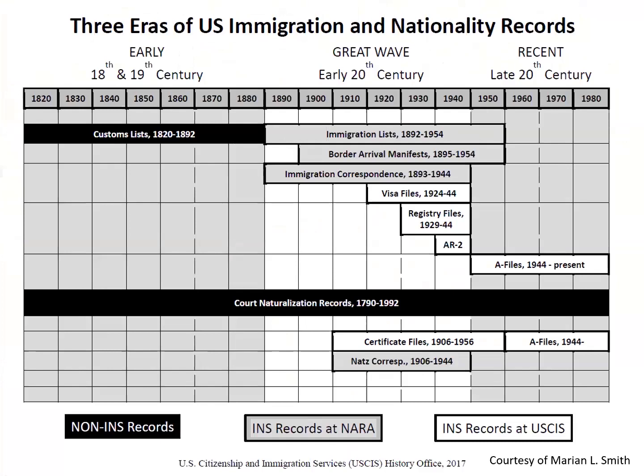My thanks to Marion Smith, who recently retired from U.S. Citizenship and Immigration Services (USCIS) after more than 30 years as the historian for the agency and its predecessor, the Immigration and Naturalization Service (INS). Marion focused on the federalization of immigration policy during the 19th and 20th centuries, while championing access to records. What we can glean from federal records today is largely due to her efforts over the past 30 years.